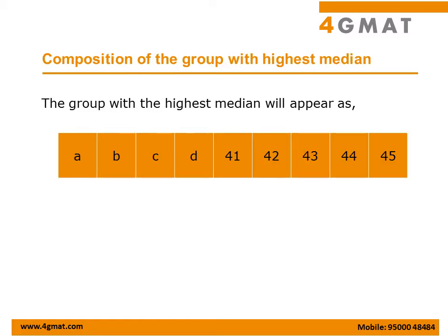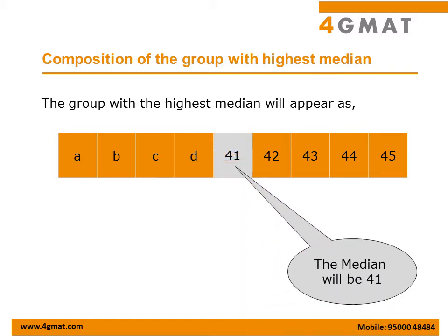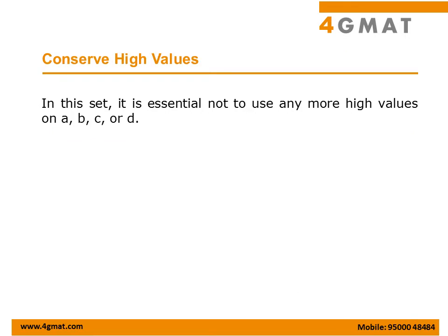Let's look at the composition of this group, called Set 1. This group has A, B, C, D and then 41 to 45, so the median for this group is 41. We have picked one out of the 5 sets and assigned the last 5 numbers. We need one more important step before repeating this exercise. We identified the group with the highest possible median and picked the highest possible 5 values, so the highest possible median in any of the 5 groups is 41.